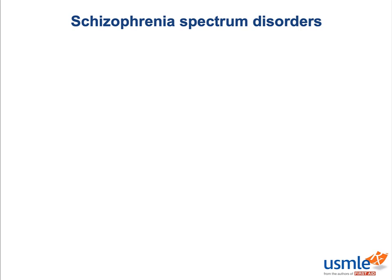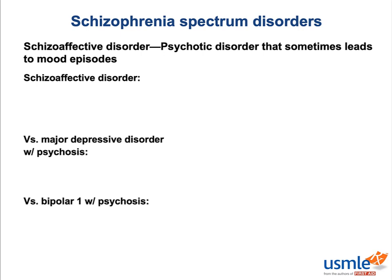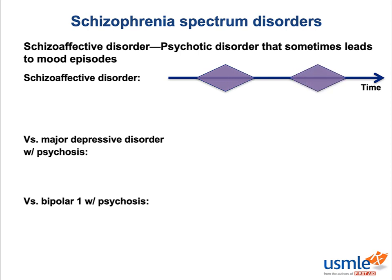Next on the list of schizophrenia spectrum disorders is schizoaffective disorder, and this is one they really try to get you with on Step 1. Schizoaffective disorder is basically a psychotic disorder that causes the patient to experience mood episodes. It's actually not uncommon for major depressive disorder, and especially bipolar disorder, to cause psychosis in and of themselves. Since schizoaffective disorder is primarily a psychotic disorder that causes mood episodes, the mood episodes must overlap with the psychotic episodes, but the psychotic episodes can occur independently of the mood episodes.